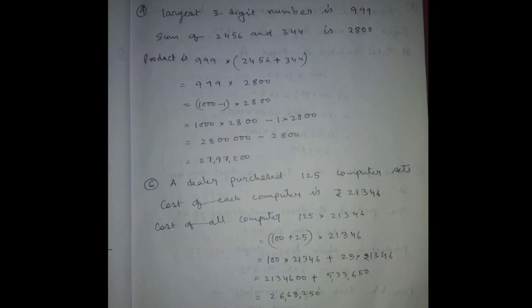125 into 21,346 equals 100 plus 25 into 21,346, which equals 100 into 21,346 plus 25 into 21,346, equal to 26,68,250. Next.